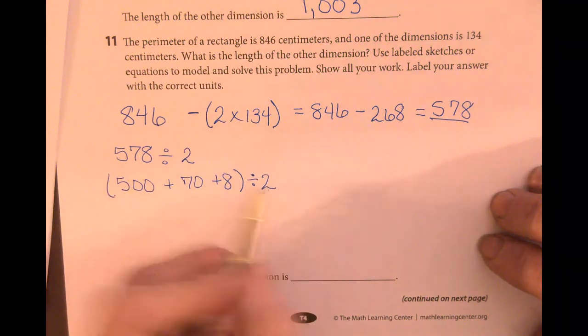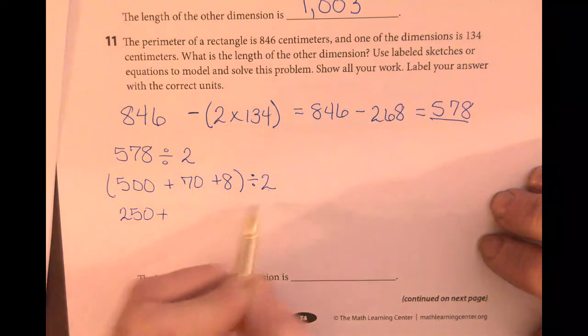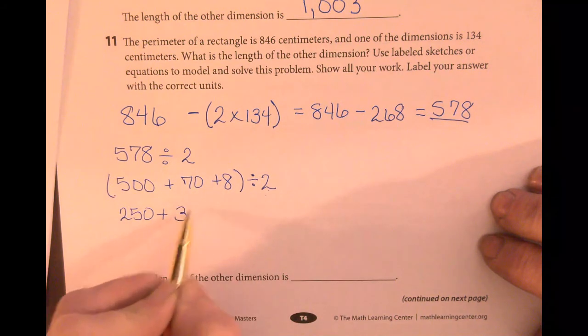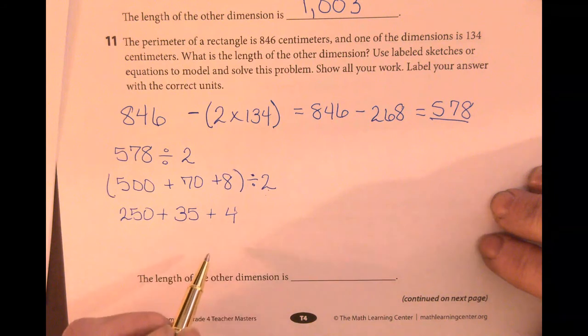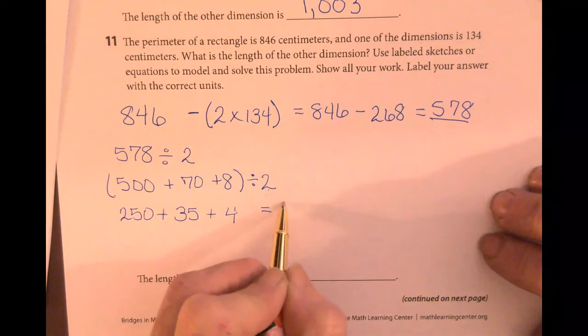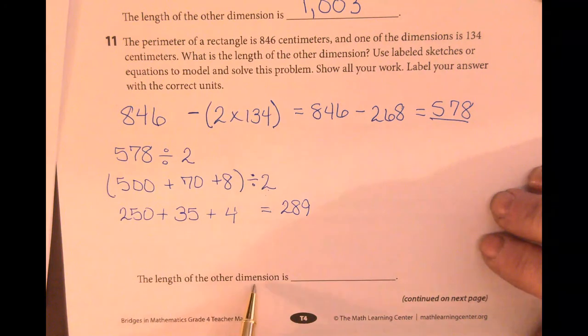500 divided by 2 is 250, 70 divided by 2 is 35, and 8 divided by 2 is 4. So 289 is the length of the other dimension.